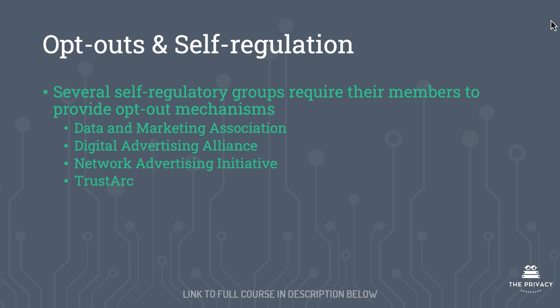Regarding opt out and self-regulation, there are several self-regulatory groups that require their members to provide opt-out mechanisms. A self-regulatory group oversees a particular industry, and the incentive for adhering to self-regulation is to keep regulators at bay and prevent mandatory legislation. Self-regulatory organizations you need to know about with regards to opt out are the Data and Marketing Association, the Digital Advertising Alliance, the Network Advertising Initiative, and TrustArc. We will come back to all of these in a future lecture.